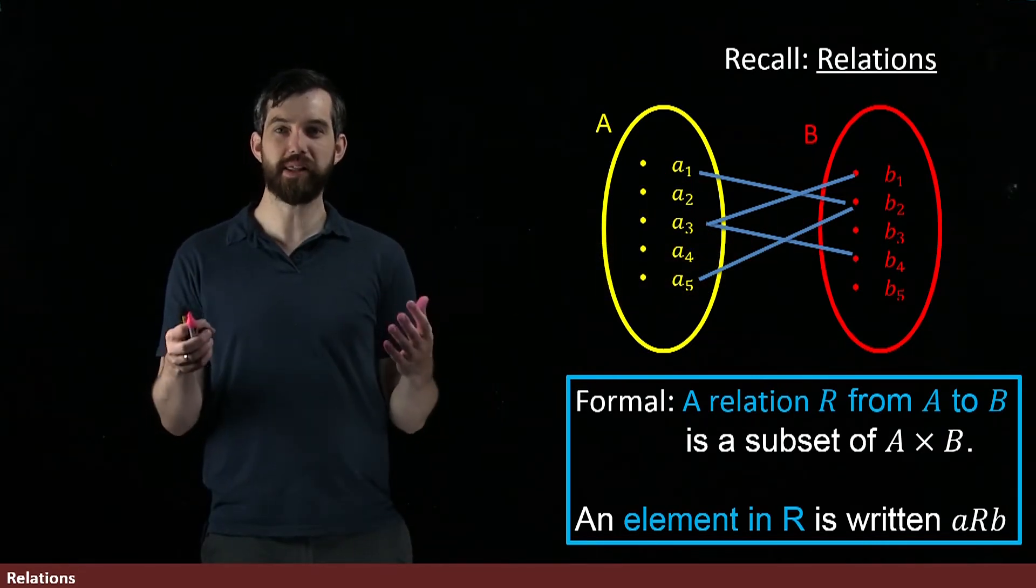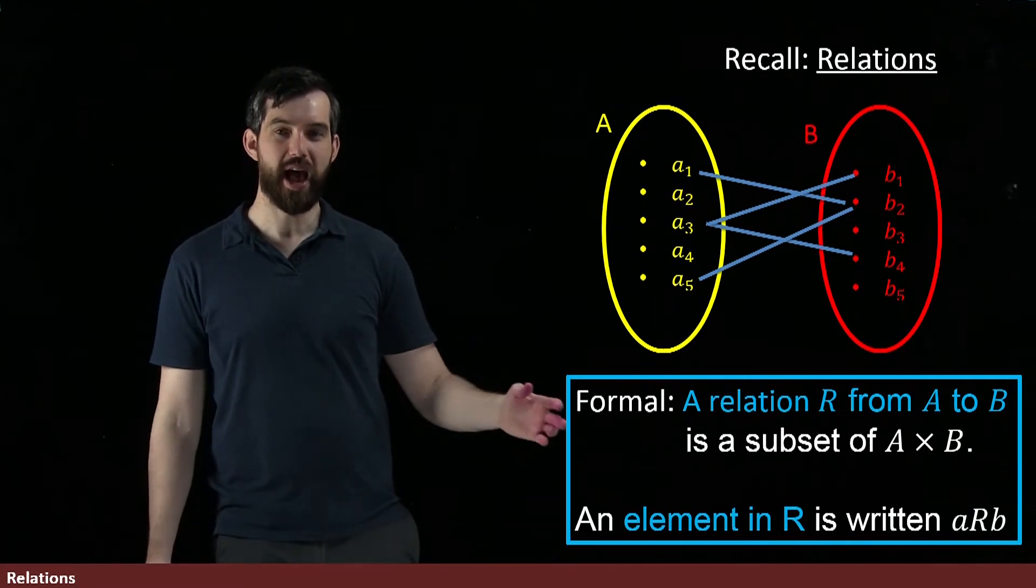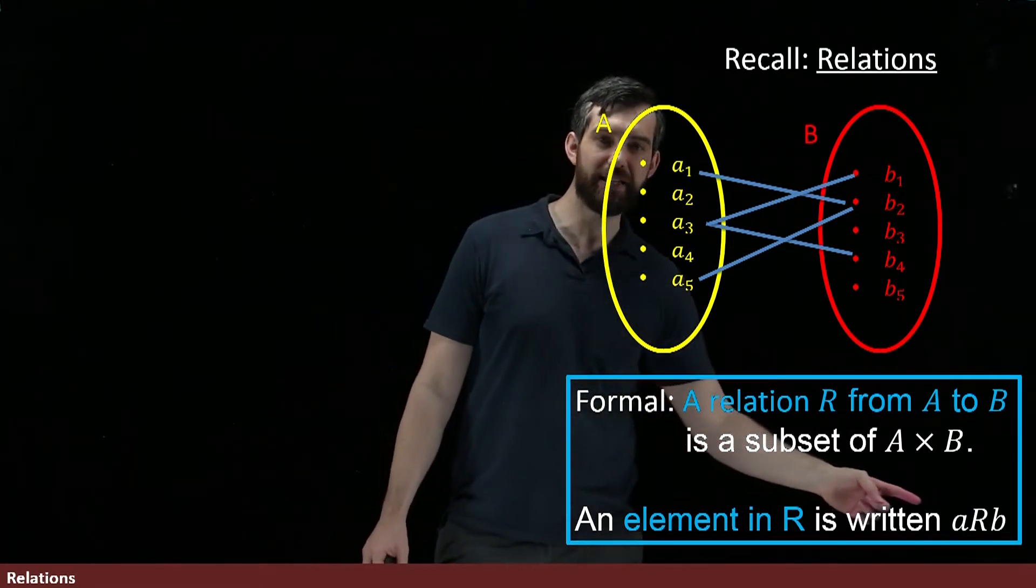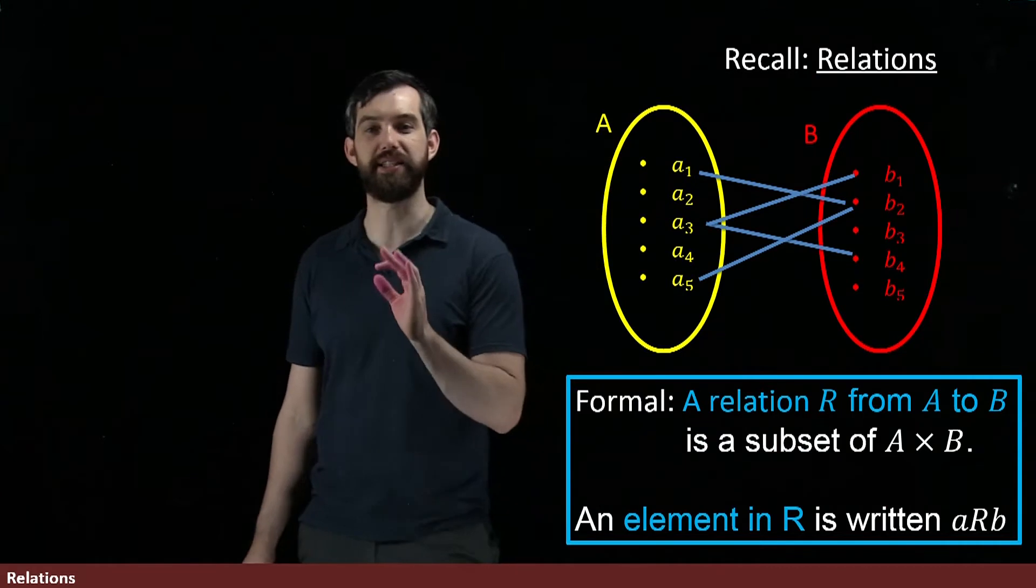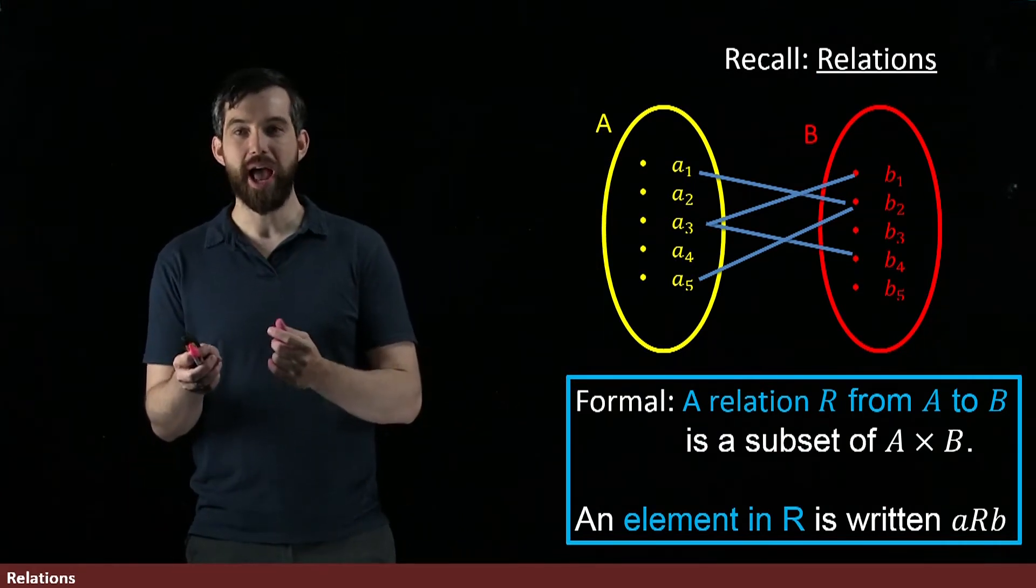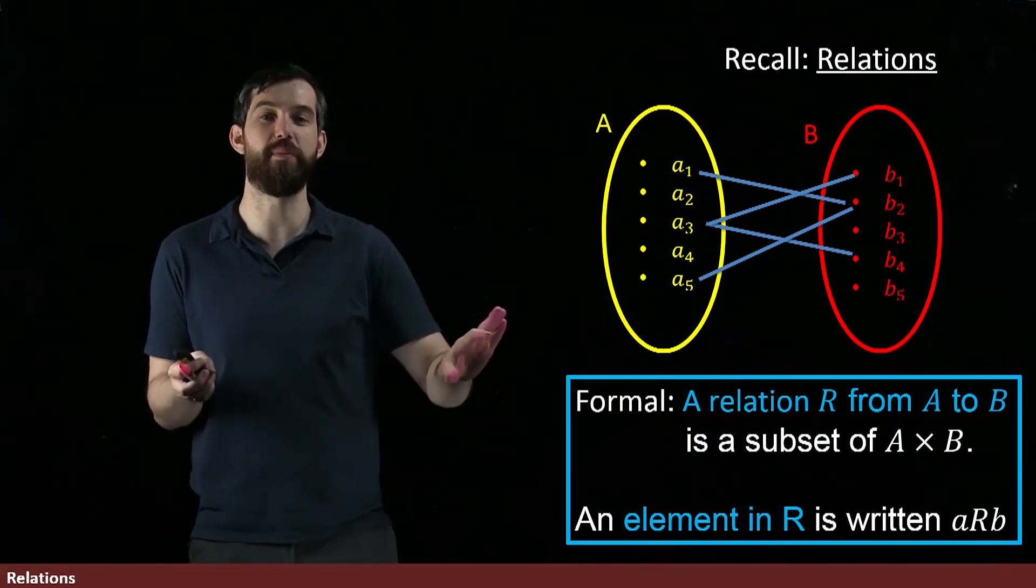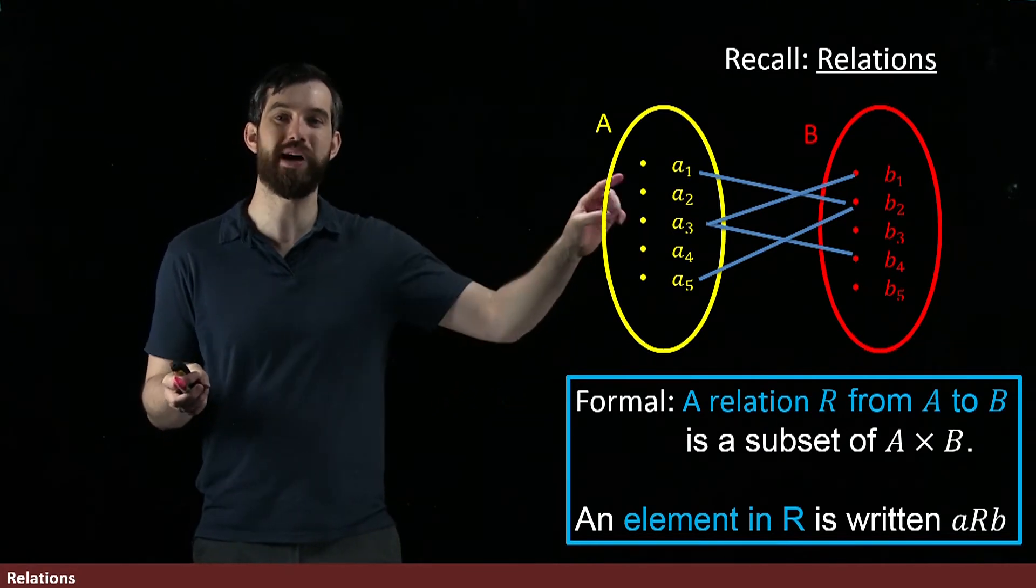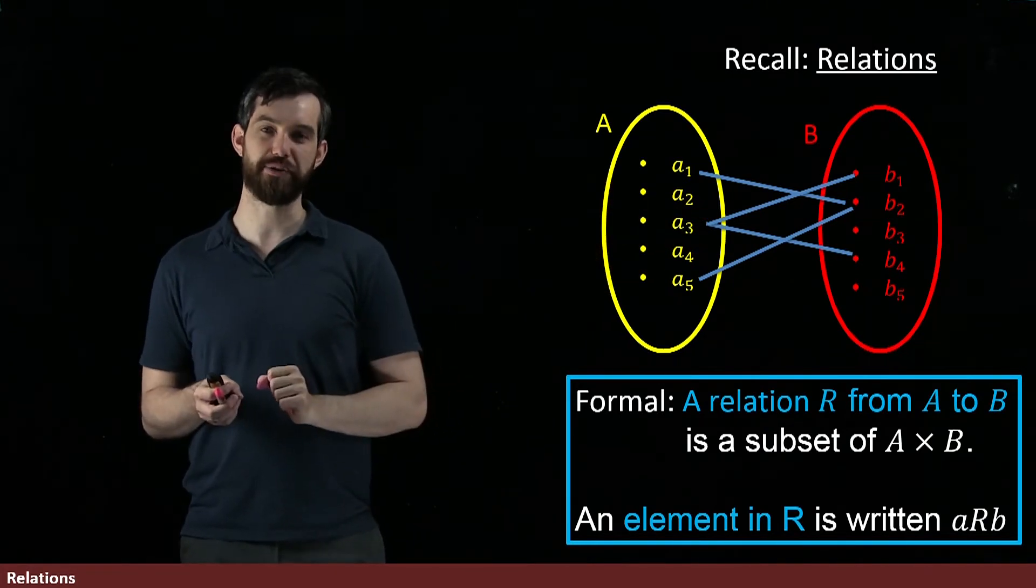And then the nomenclature we had is we're going to say that an element in R is written as A relates to B, precisely when little a, comma, little b was an element of your Cartesian product, or there was an arrow up here in your arrow diagram.